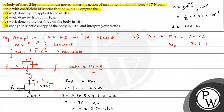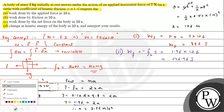For Part B, we calculate work done by friction. Work done by friction = fk × s × cos180°. The angle is 180° because displacement is towards the right but friction acts towards the left, so cos180° = -1. The friction force was calculated as 1.96 N, so work done by friction = -1.96 × 126 = -246.96 joules.